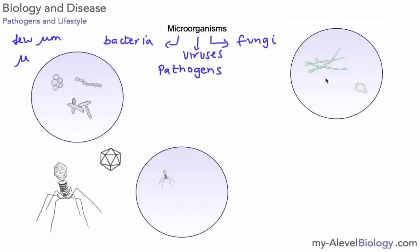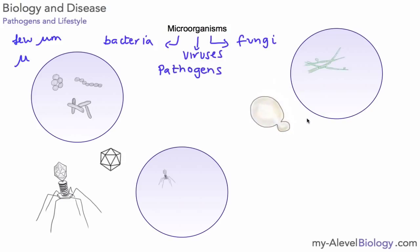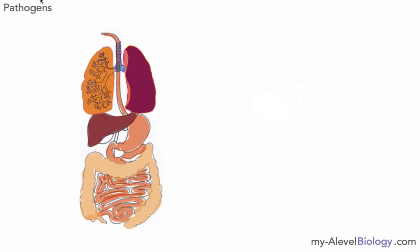The last type of microorganism is fungi. Here I've got an example of one that causes athlete's foot — a more filamentous, stringy type of fungus. Another example is yeast, which we've come across in GCSE studies. Yeast is quite a useful microorganism, but it can in some cases cause disease as well.